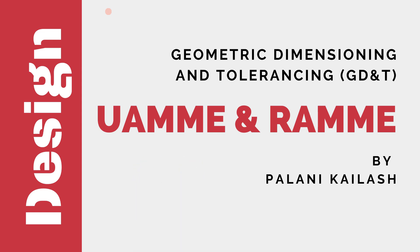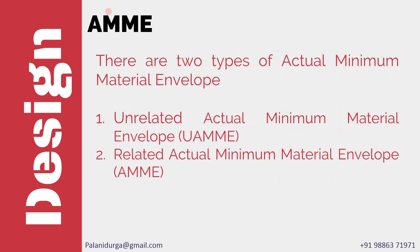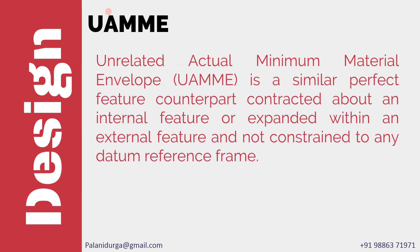As I mentioned in my video on actual minimum material envelope, this envelope is an imaginary envelope and they are of two types. The first one is called the unrelated actual minimum material envelope, which is a similar perfect feature counterpart contracted about an internal feature or expanded within an external feature, and not constrained to any datum reference frame. I will explain this with an example.